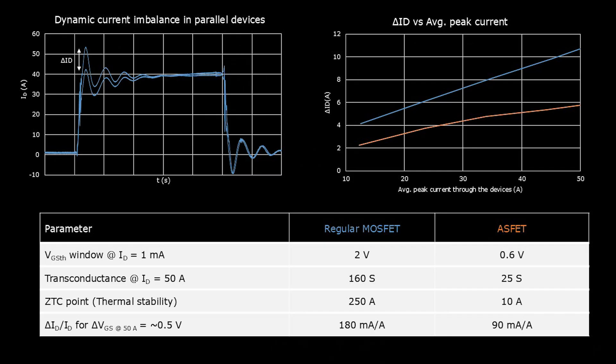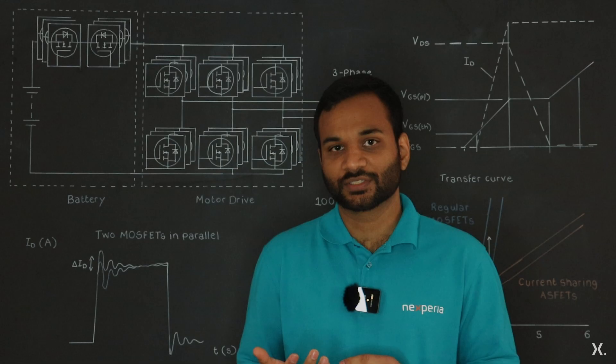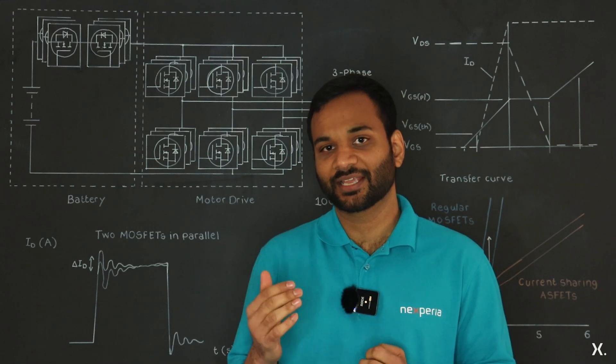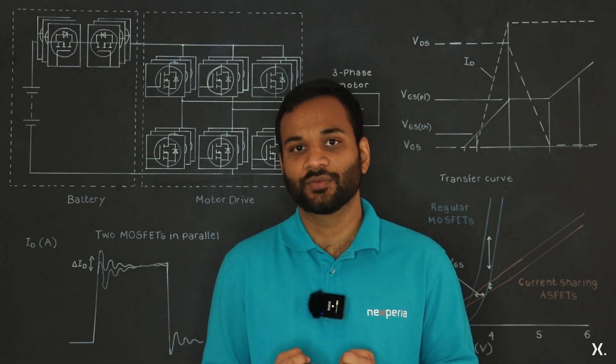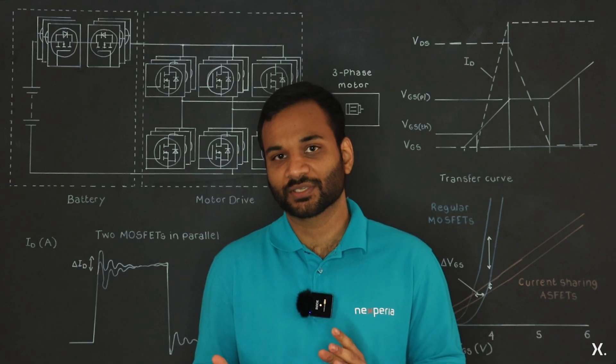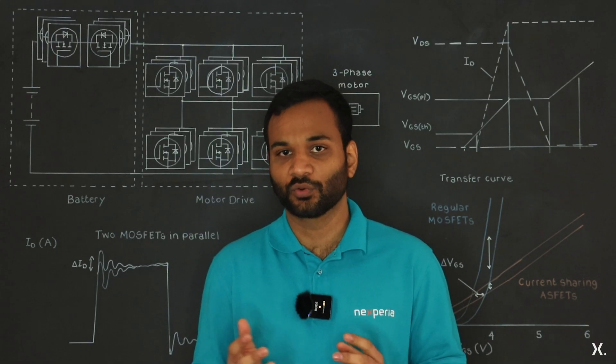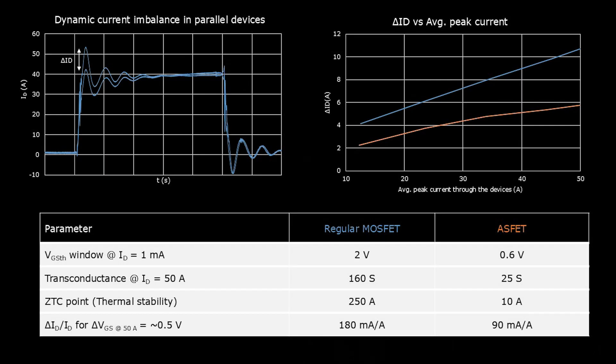The devices are tested across a range of load currents. The regular MOSFETs show an imbalance much higher than the ASFETs with about 180mA of imbalance per ampere of load current, with the ASFETs at 90mA per ampere of load current.